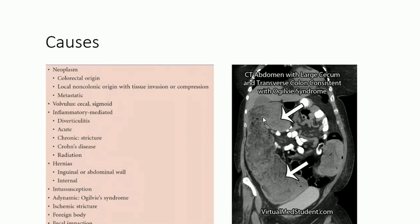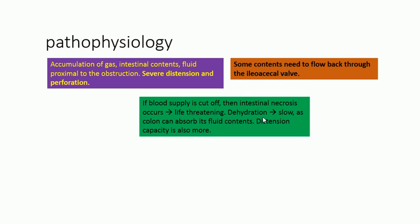When there is a large bowel obstruction, there is a point in the bowel which is constricted, not allowing contents behind it to pass through. All the stuff gets stuck proximal to the obstruction — there is accumulation of gas, intestinal contents, and fluids. The colon starts to swell and expand, causing severe distension. After some time, the walls become thin and they perforate.